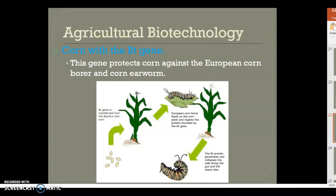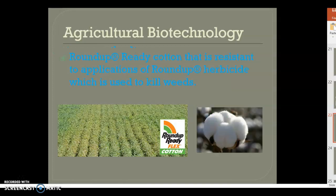The Bt gene protects the corn from an earworm, which is an insect that infests your corn, sucks the life out of it, and leaves you with no corn for harvest. Then there's Roundup Ready cotton and corn — if you drive down Route 55, there used to be signs for it. It is resistant to applications of Roundup herbicide, which is used to kill weeds. You can plant your corn or cotton, and as weeds grow you can spray the herbicide and it will kill the weeds but not your plant.